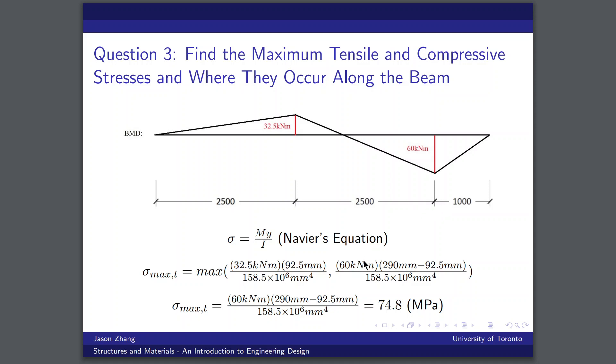So we can clearly see that this second term is much larger, which means that the maximum tensile stress will occur at this point, one meter from the right edge of the beam, and it will be occurring on the top face, and it will have a value of approximately 74.8 megapascals.